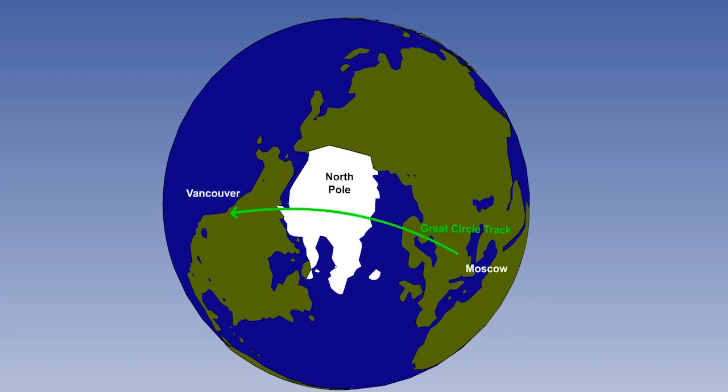Secondly, radio bearings are great circles, so they can be plotted without application of conversion angle. You still need to apply chart convergence in cases where the bearing is measured at the aircraft, but this can be achieved by plotting. No calculation is required.